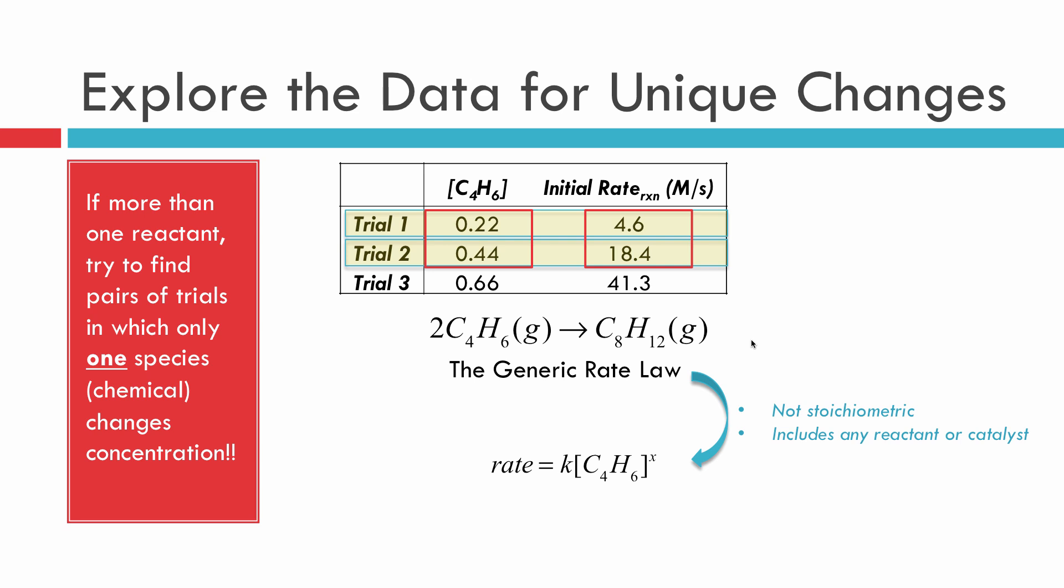All right. Now that we have this generic rate law, each trial can be given its own generic rate law. Notice that I've given this a subscript one and the concentration over here is subscript one to just tell myself it's from trial one, and of course this two and this two are from trial two. So what we're going to do is use this information now and make a ratio of rates that will allow us to find X. And here's where we're going to have some fun with some math.